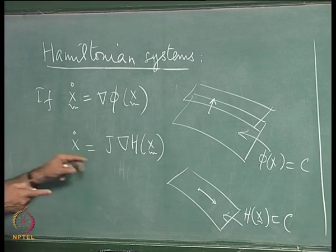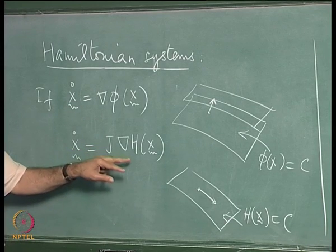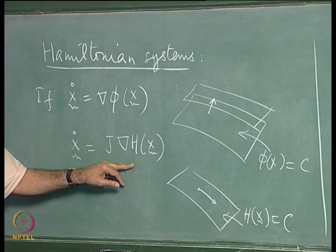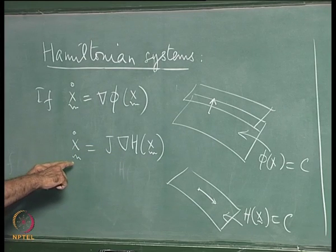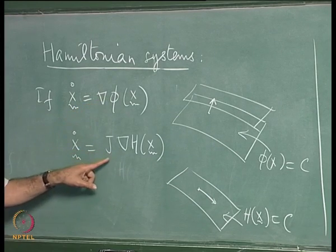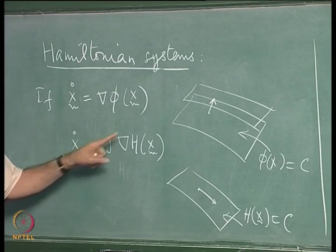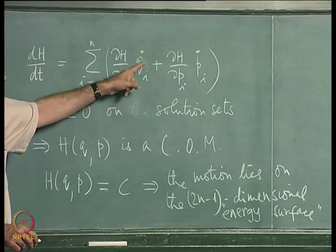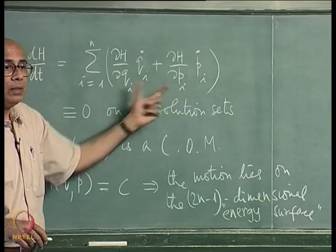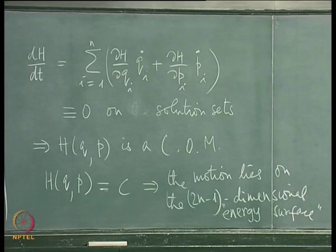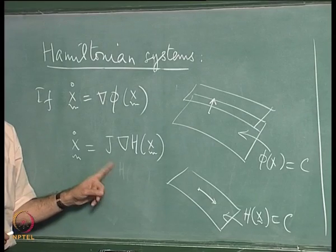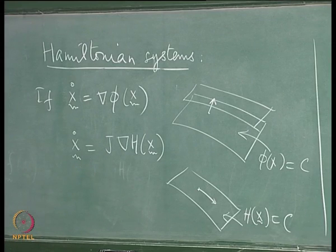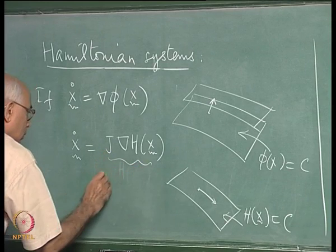The J ensures that the derivative of the first component of x is the partial derivative of H with respect to the (n+1)th component, and so on. It also ensures the derivative of the nth component involves a minus sign. This pairwise minus sign ensures H itself is a constant of the motion identically. This is formalized by saying that J makes this the symplectic gradient of H, ensuring H is a constant of the motion.